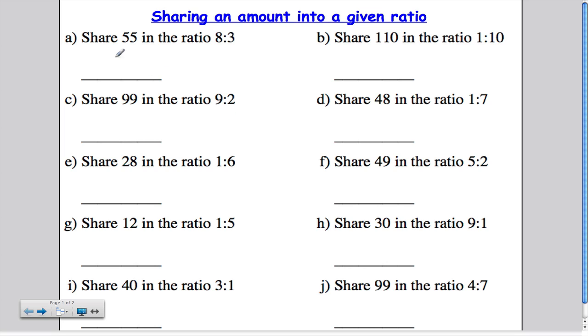Right, so I have this problem. I have to share 55 in a ratio 8 to 3. So, step one is to work out how many parts in total there are, and we simply add these two numbers together to find out the total number of parts. So 8 plus 3 is 11, so I have 11 parts in total.